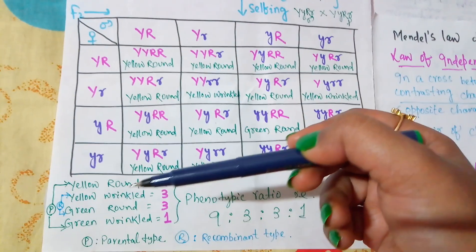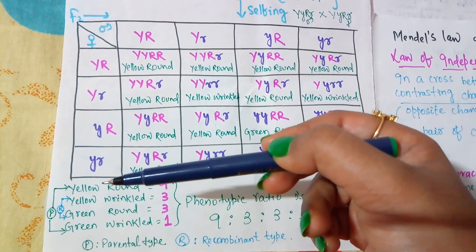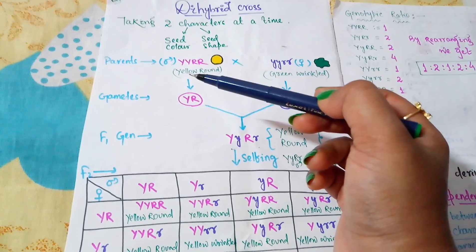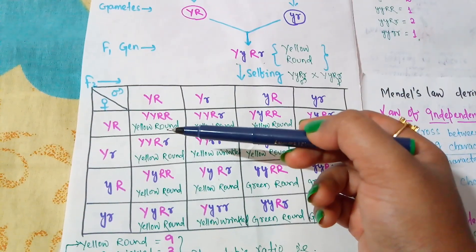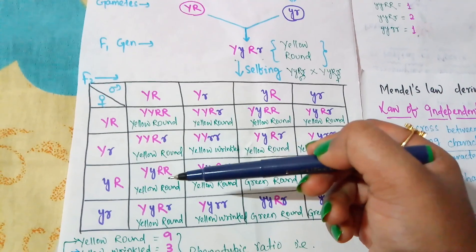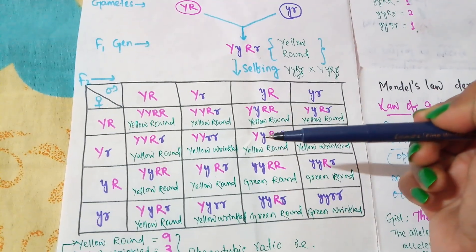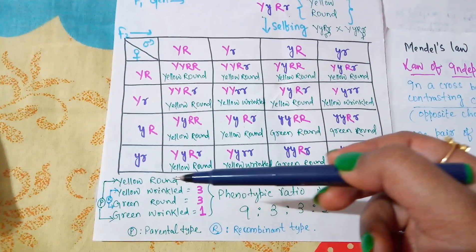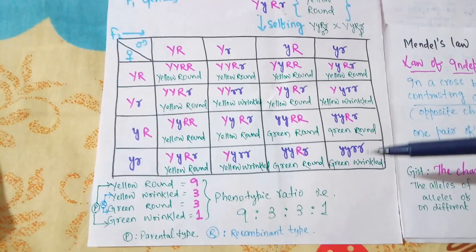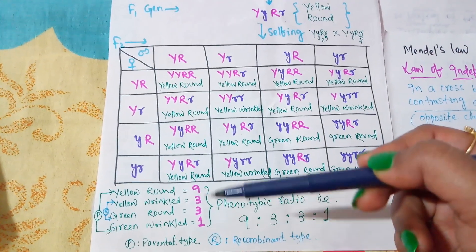Among the 16 different possible genotypes, two are parental types — that is, yellow round and green wrinkle. Yellow round appears 9 times and green wrinkle appears only once. These are the two parental types.